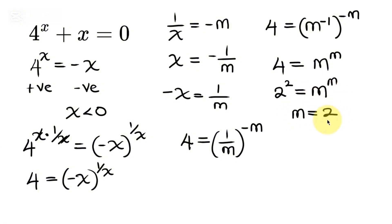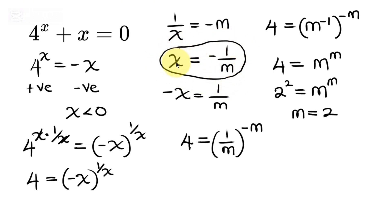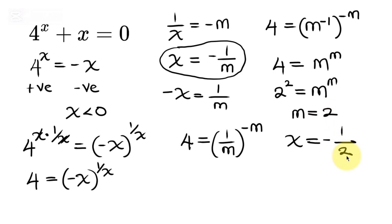Coming back to our expression to get x, we have x equal to negative 1 over m, and since m equals 2, x equals negative 1 over 2. And this is our final answer.